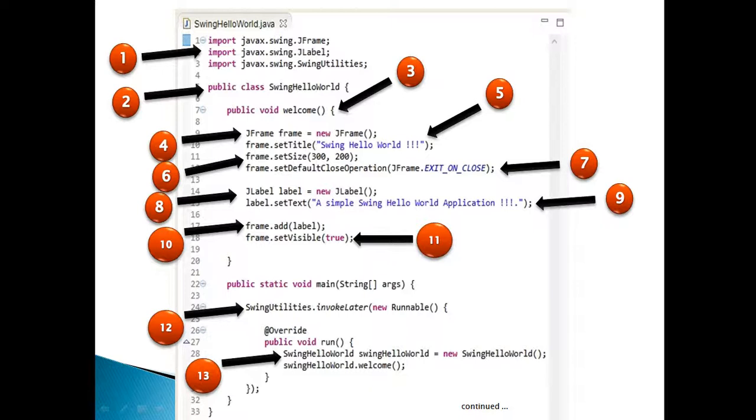Moving ahead. Step 9, set the text of the label by calling method set text and pass the text you want initially JLabel shows. Here we have passed text as a simple swing hello world application.